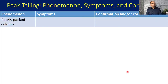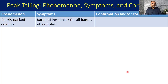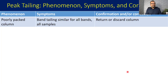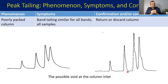A poorly packed column is important to consider — properly packed columns are required to get symmetric peaks. If your column is not properly packed, it can result in peak tailing or peak distortion. The symptom is that band tailing is similar for all bands across all samples — for both early-eluting and late-eluting peaks you will see a similar kind of tailing pattern. If the column has been found to be bad, you cannot use it for further analysis; you must return it or discard it.